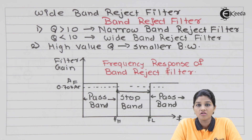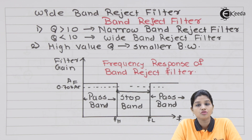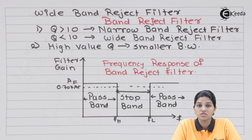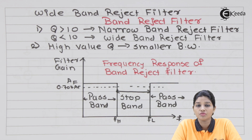The other name of a band reject filter is the elimination filter or attenuation filter. In terms of frequency response, the two important terms related to a filter are the pass band and stop band. Frequency response is basically a graph between voltage gain and frequency. The pass band is that band of frequencies which are passed by the filter, whereas the stop band consists of frequencies which are stopped or attenuated by the filter.